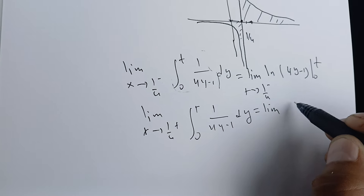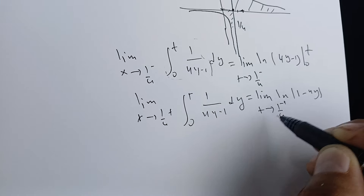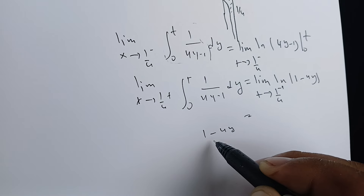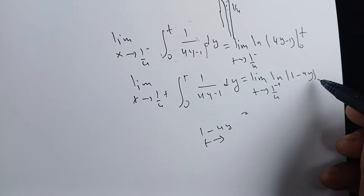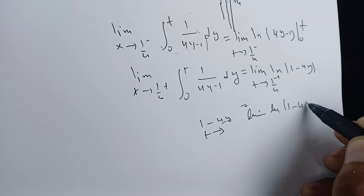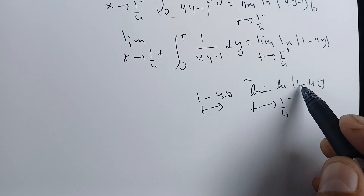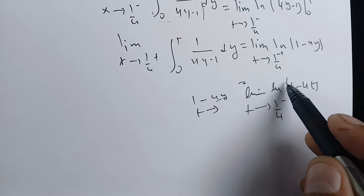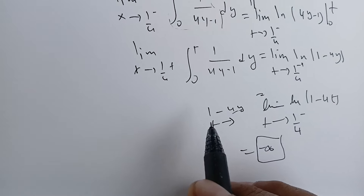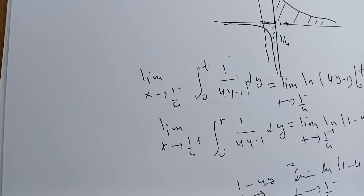When approaching from the left, this becomes the natural log of |1 - 4t|. As t goes to 1/4 from the left, the expression 1 - 4t approaches zero from the positive side. The limit of the natural log as its argument approaches zero from the right is minus infinity. Therefore, this integral is infinite — it diverges.